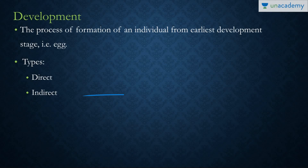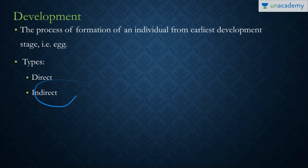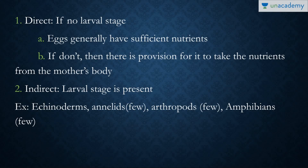To clarify: in direct development, there is no larval form. In indirect development, the egg first turns into a larva and then into the adult. So — direct: no larval form; indirect: a larval form is present.